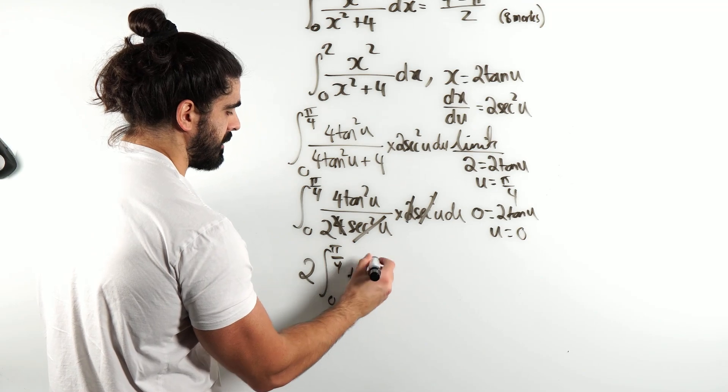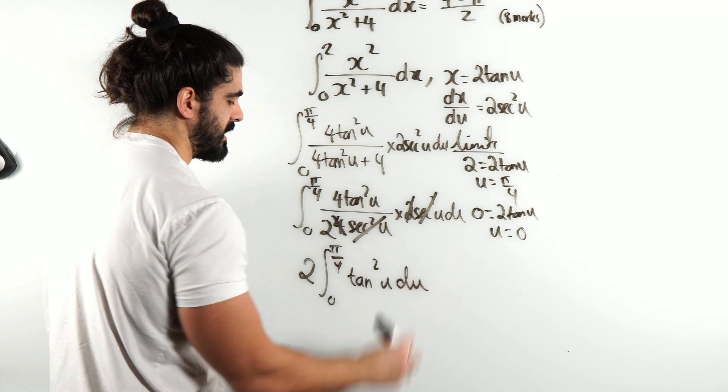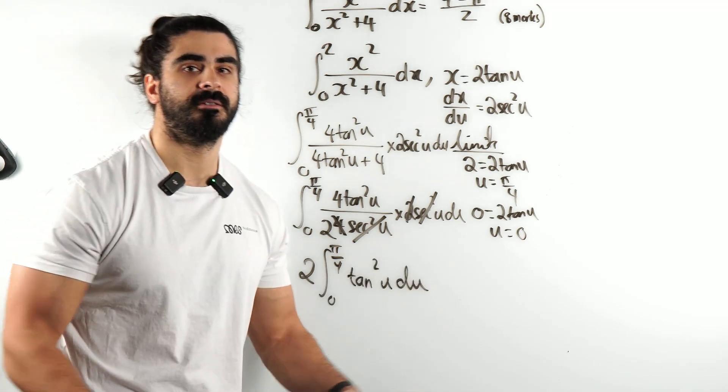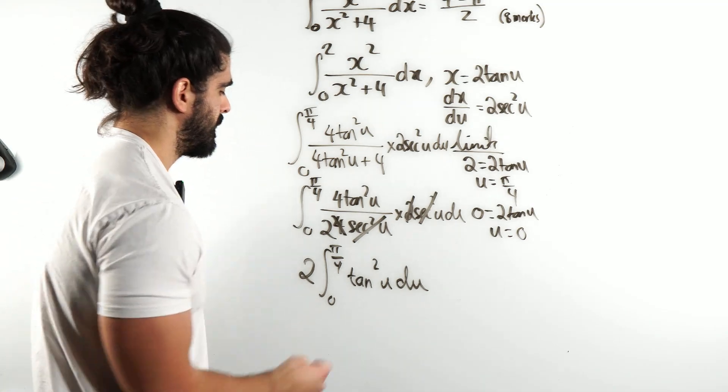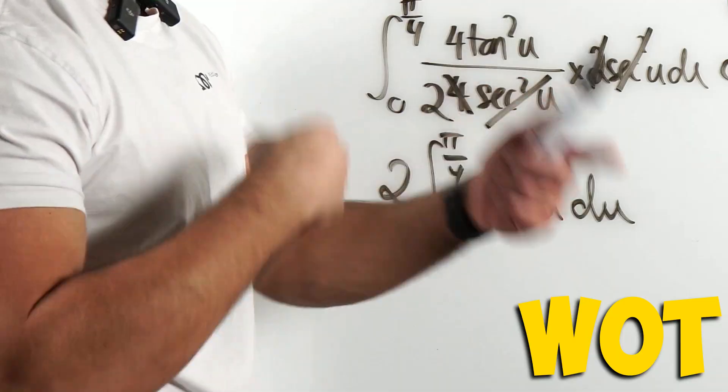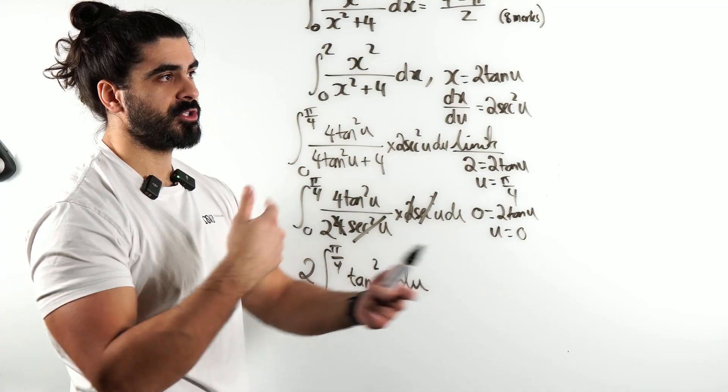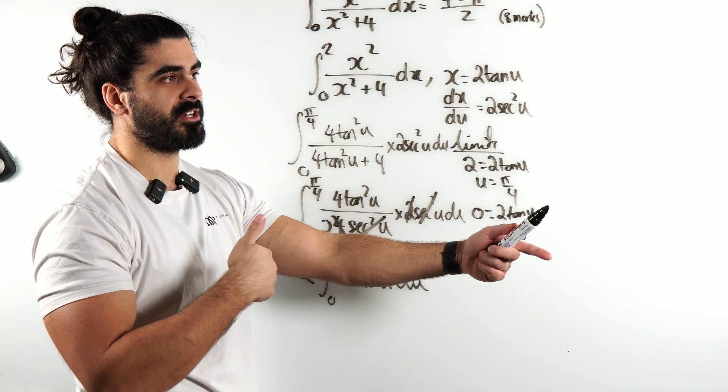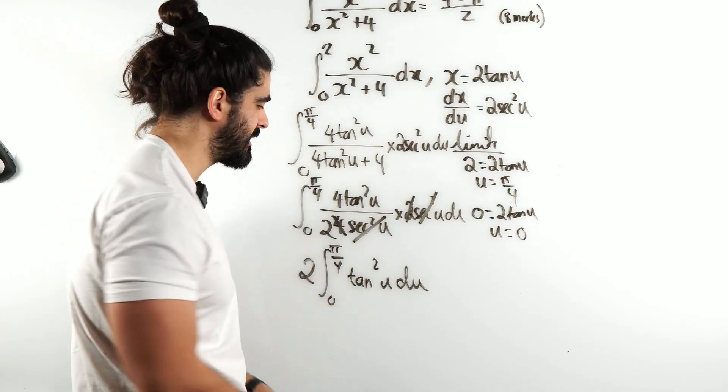And then the question becomes, how do we integrate tan²(u)? Well, you can't. We need to use the identities again. I can rewrite tan²(u) knowing 1 + tan²(u) = sec²(u), so tan²(u) = sec²(u) - 1. And we know how to integrate sec²(u).